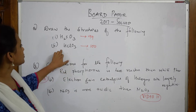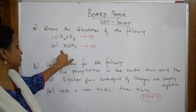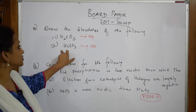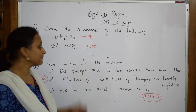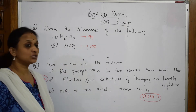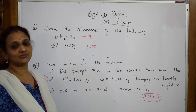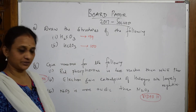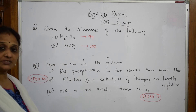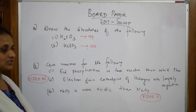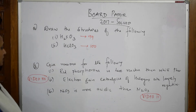They've given us the structure of H₂SO₃, which I did in video number 99, and HClO₃, which I did in video number 100 — covering oxoacids of sulfur and chlorine.